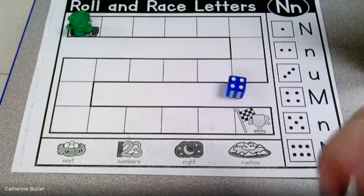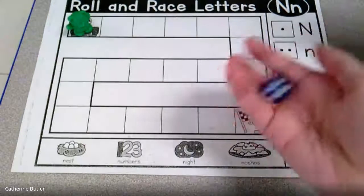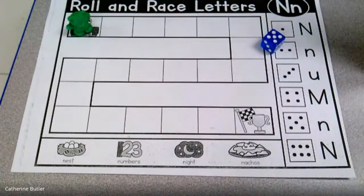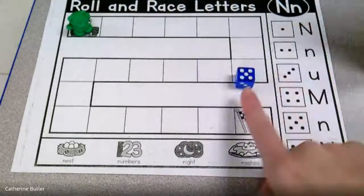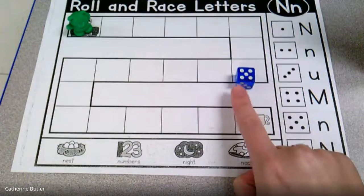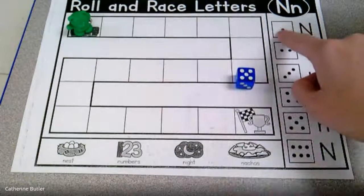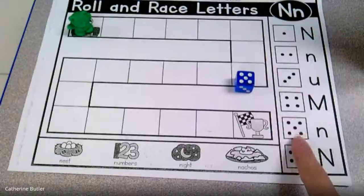Alright, so we're gonna watch and then you guys can play. Miss Butler is gonna roll her die. She rolled a five. So when she rolls, she's gonna look at her number. How many did I roll again? Five. So I'm gonna look over here. I'm gonna find that number five. Oh, there it is.